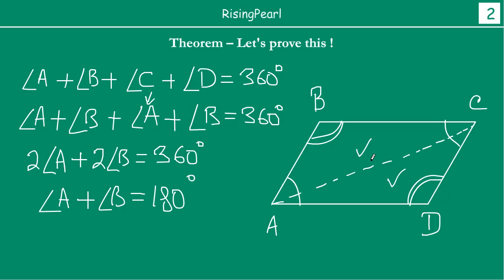Now, Dostho, if you look at lines BC and AD, there is a transversal AB that intersects them such that the sum of interior angles on the same side of the transversal is 180 degrees — they are supplementary. As we have seen in lines and angles, when this happens, the two lines BC and AD are parallel to each other. This implies that BC is parallel to AD.